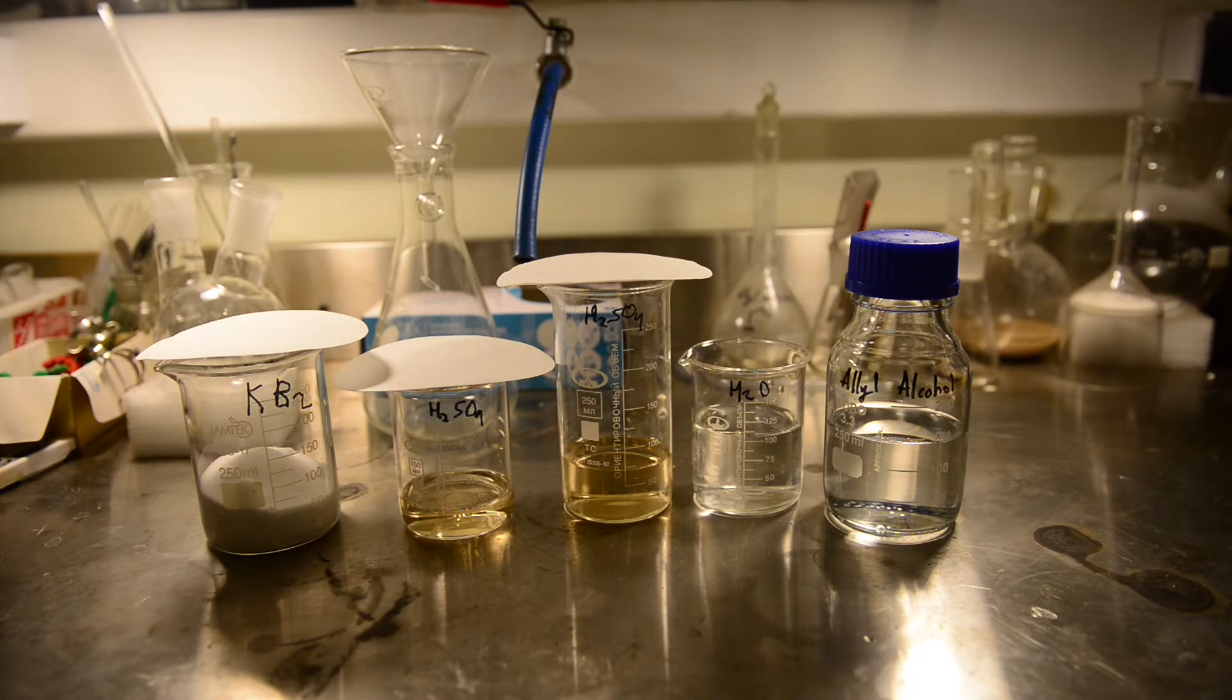Today we are going to brominate the product we got in the previous video, allyl alcohol. The product of this bromination reaction is allyl bromide, a very useful reagent and building block in organic synthesis, especially for Grignard reactions.